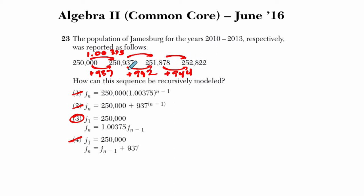So for example, if I divide 251,000 by 250,000 here, I get about 1.00375. And if I divide 252,000 by 251, of course, it's exactly 252,822 and 251,878. If I divide those two, I'm going to get about 1.00375 each time, which means